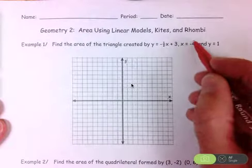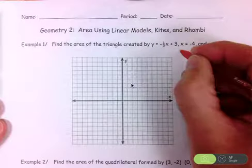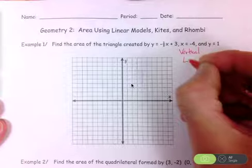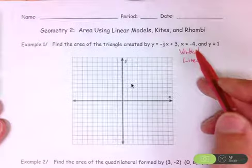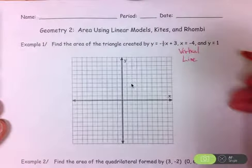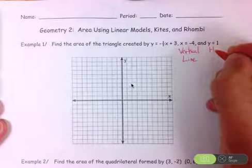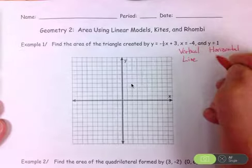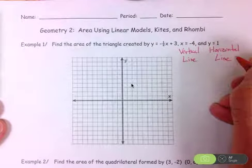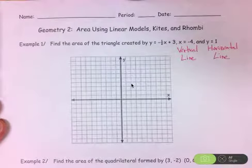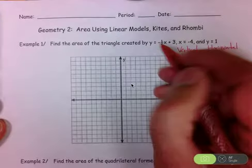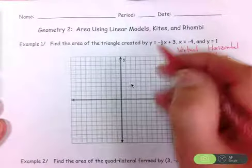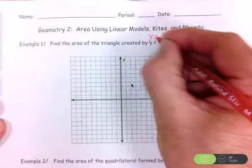So x equals negative four — that's the equation of a vertical line. We worked with those when we were doing reflections. Similarly, y equals one is the equation of a horizontal line. We reviewed those when we were working with reflections. And this is the equation of a straight line in slope-intercept form: y equals mx plus b.